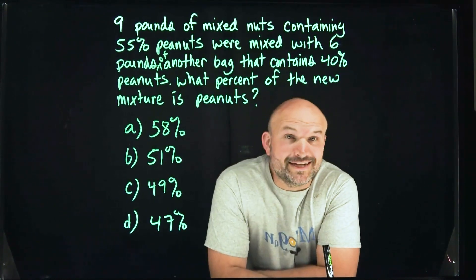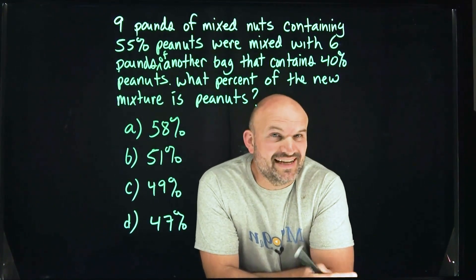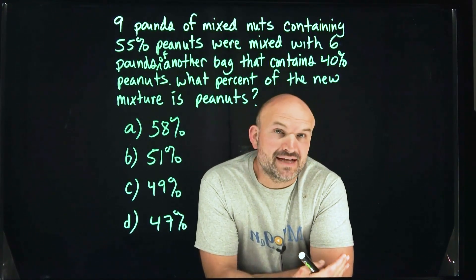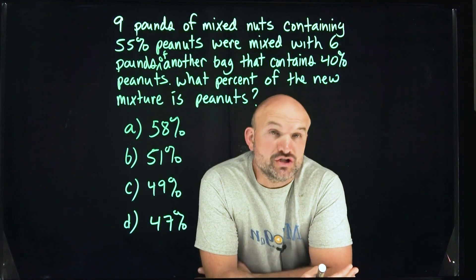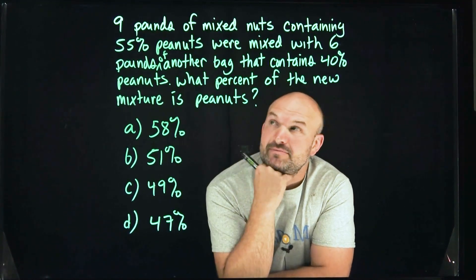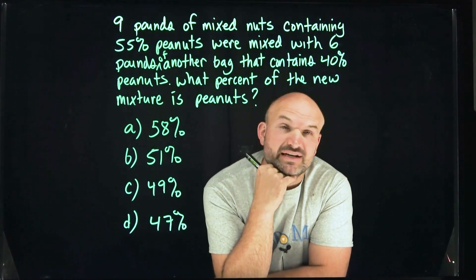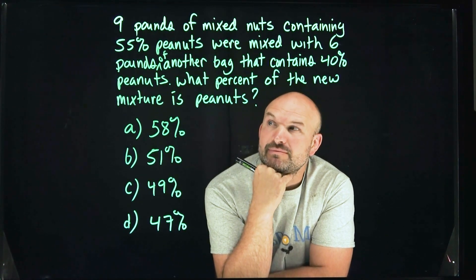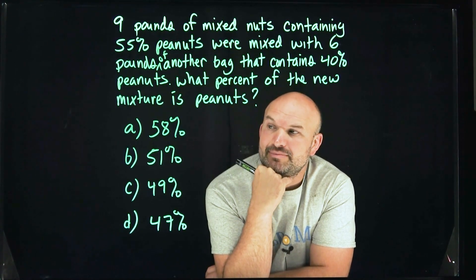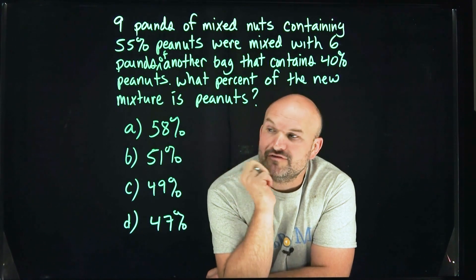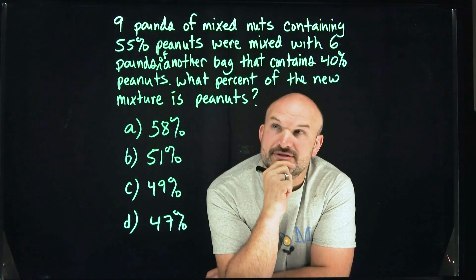In this problem, we have a lot of nuts — particularly peanuts. What we're doing is taking two bags that have partial peanuts: a 55% mixture and a 40% mixture, and we're going to combine them into a new bag. What we want to determine is what percent of peanuts we're going to have in that new bag. We have four answer choices.